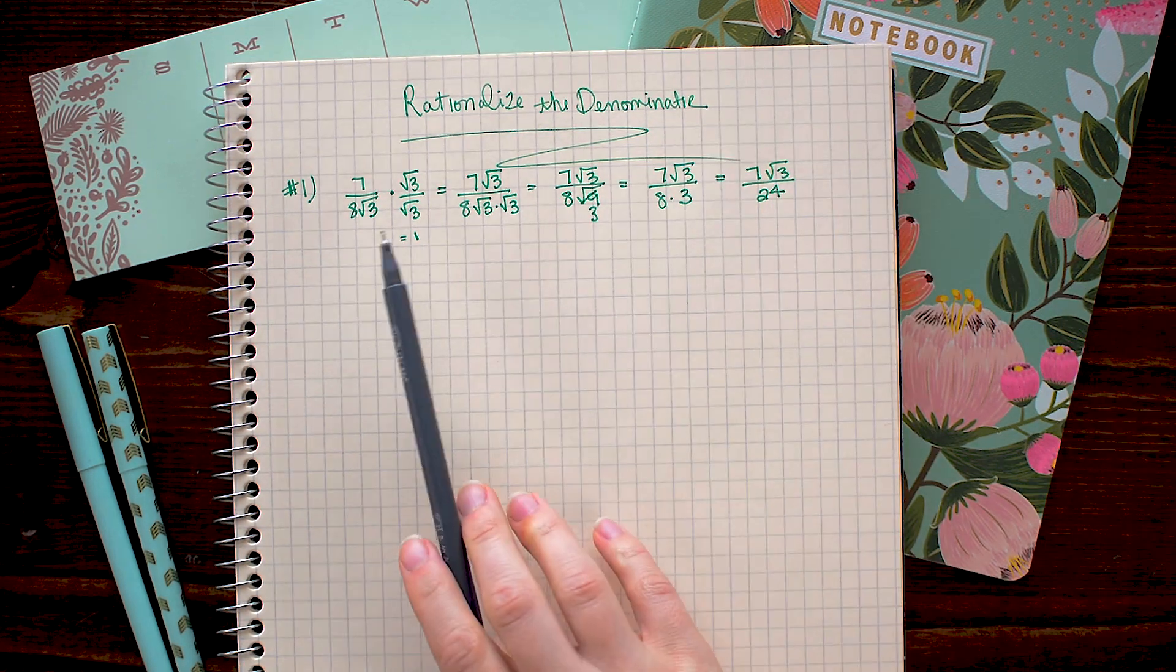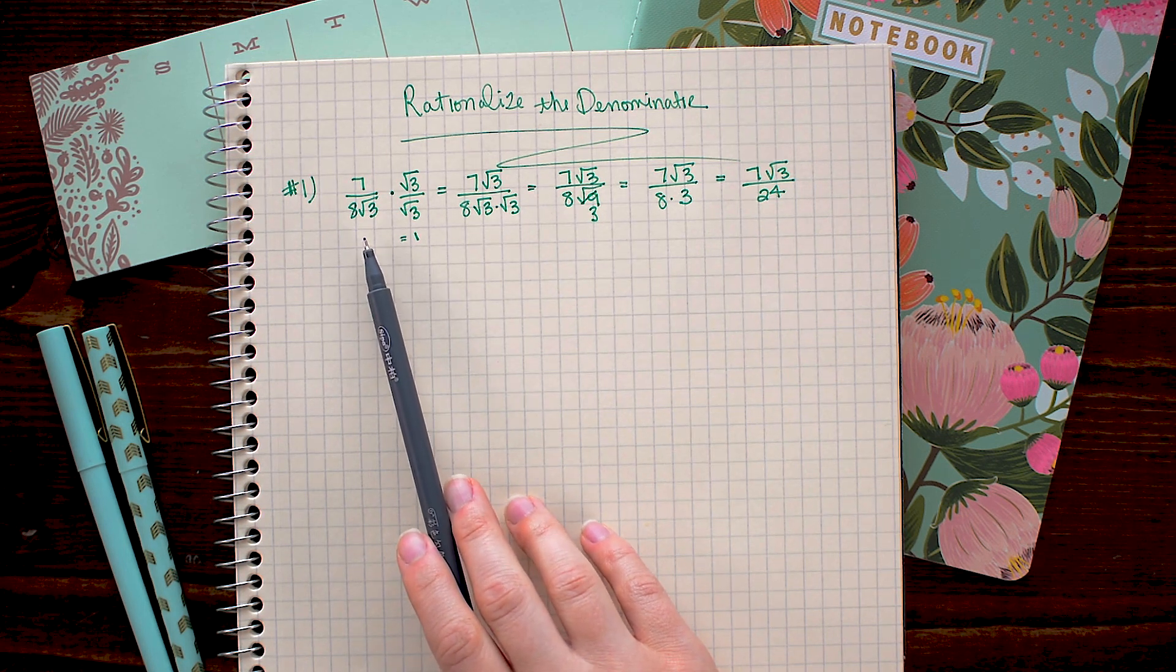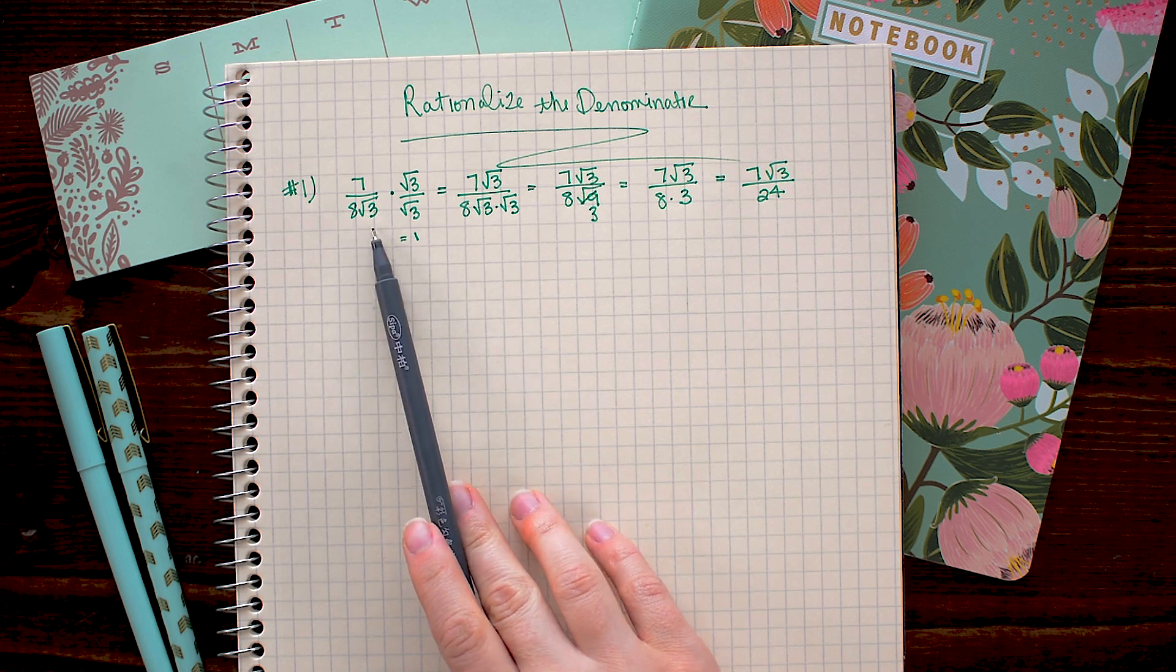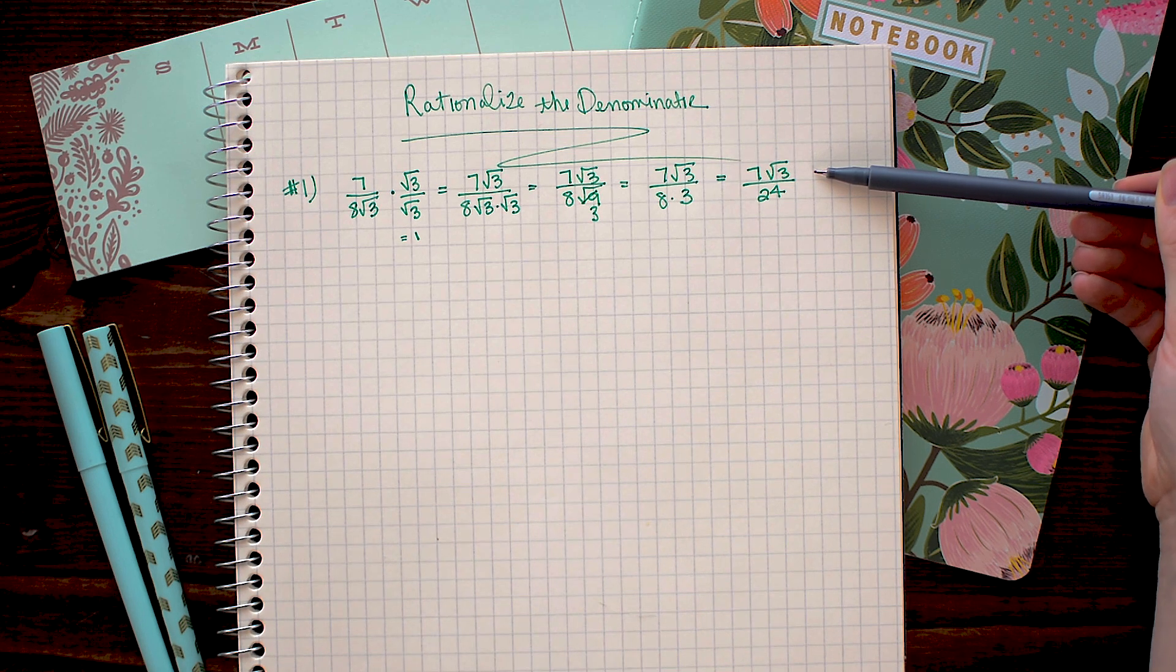That is the same as 7 over 8 square root 3, except we altered how it looked so that the square root was no longer in the denominator, and instead is in the numerator. And that is rationalizing the denominator.